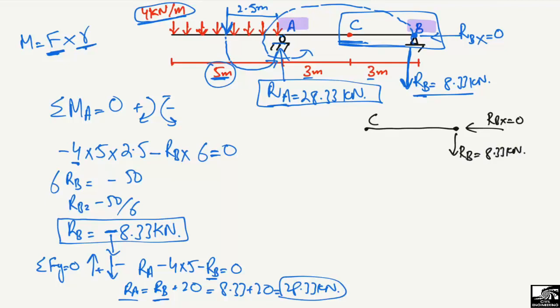We need to find the shear force VC, the bending moment MC, and the normal force VCx at point C. The normal force VCx is directly equal to zero because there is no horizontal force acting on this portion of the beam.